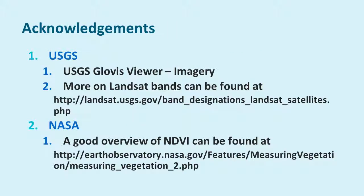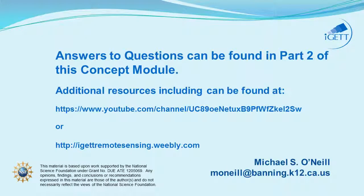A quick couple of acknowledgments: USGS and NASA are very important to the work we do in remote sensing. The USGS Globe Viewer provides imagery, some of which we saw here, and there is more on the Landsat bands available at that website. NASA also provides a good overview of NDVI at the website listed. Answers to the questions in this module can be found in part 2, and additional resources can be found at the IGET YouTube channel or the IGET web page. Thank you for watching and happy remote sensing — we'll see you next time.